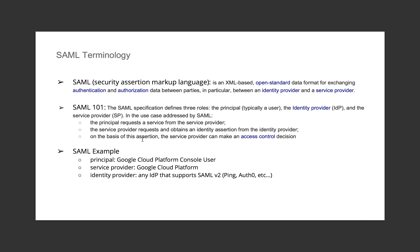In my example today, the principal is a user who's trying to access the Google Cloud Platform console. The service provider is Google Cloud Platform, and the identity provider could be any identity provider that supports SAML version 2.0, such as Ping. In my example, because there's a free trial for Auth0, I'm going to go ahead and use Auth0 as my identity provider.